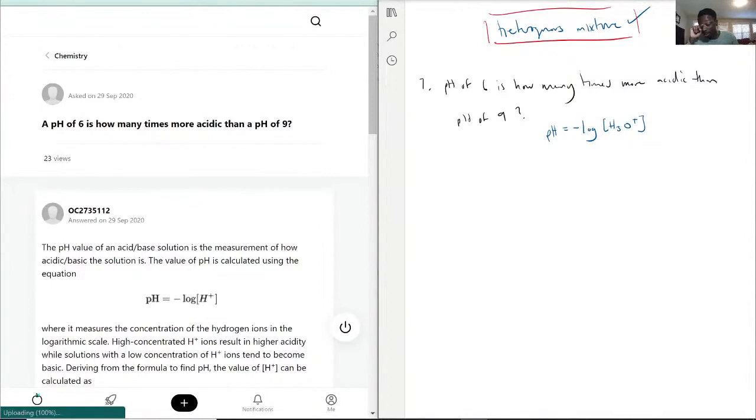When this type of question is asking how many times more acidic, it's trying to ask you how many times more of this stuff does it have compared to that. It's not asking you what the pH difference is, because then you'd just say it's three times more acidic, and that would actually be incorrect. The goal here would be to flip this equation over to where now you're solving for that H3O.